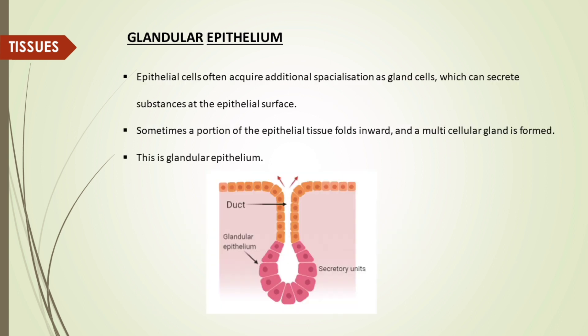Glandular epithelium: epithelial cells often acquire additional specialization as gland cells, which can secrete substances at the epithelial surface. Sometimes a portion of the epithelial tissue folds inward and a multicellular gland is formed. This is glandular epithelium.